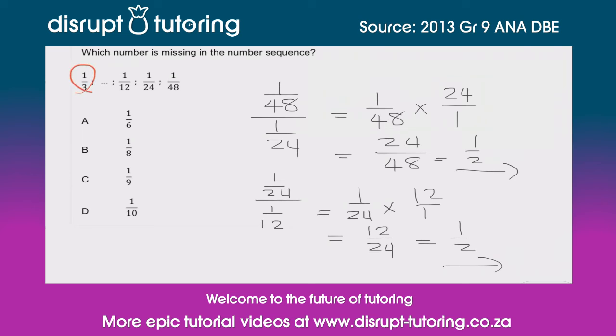Now what would we do to get the next term considering that our first term is 1/3? So if we've got 1/3 and we times that by 1/2, that's going to give us 1/6. So that will be the answer we're looking for, and that answer happens to be A.